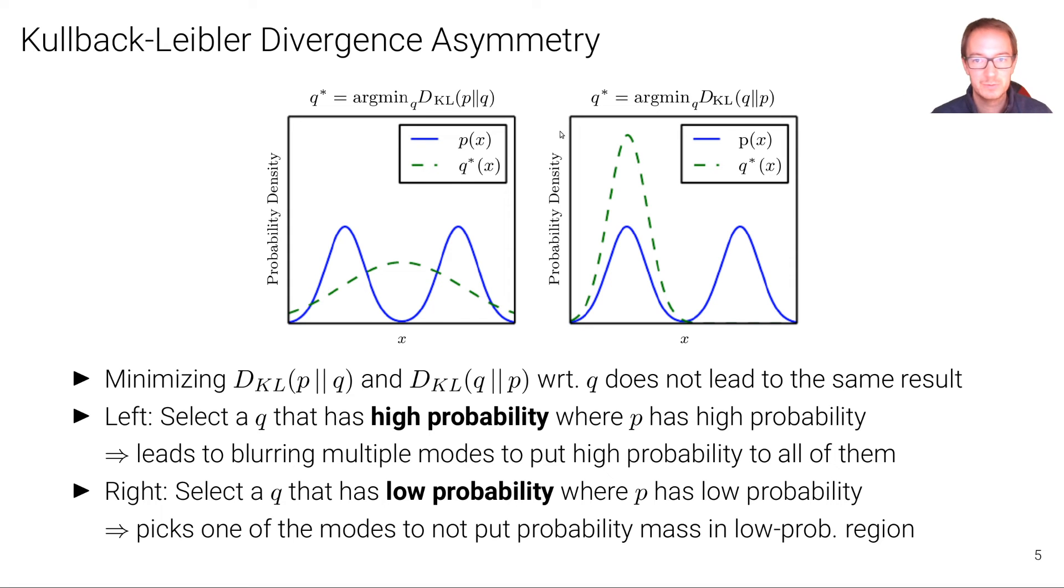However, if we turn this around and we minimize D(Q||P), what happens is that we, in this case, select a Q that has a low probability where P has low probability. So now we want to find a Q that still fits this distribution, the blue one well, but we want, it's more important for us that where P has a low probability, then Q also should have a low probability. So this is not a viable solution. And what happens in this case is that the minimizer then, depending on the initialization, picks one of the modes instead of putting probability mass more uniformly as in the previous case.